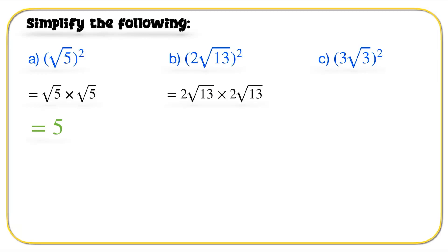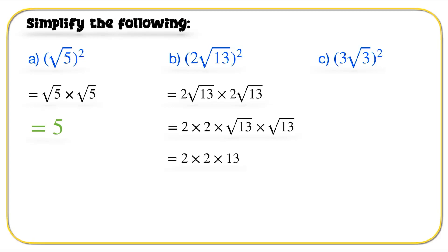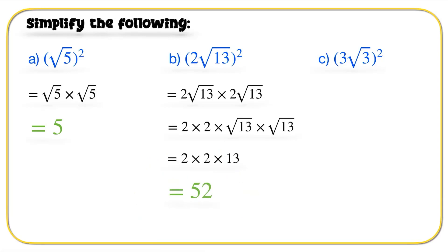Part B: 2 root 13 times 2 root 13. We have 2 times 2 times root 13 times root 13. Root 13 times root 13 gives you 13. So 2 times 2 times 13 gives us 52.